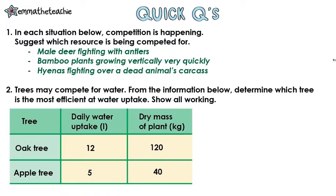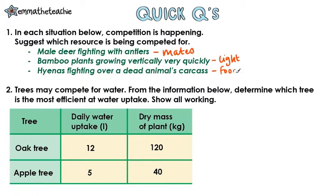Okay, number one. In each situation below, competition is happening. Suggest which resource is being competed for. Male deer fighting with antlers — this is competition for mates. Bamboo plants growing vertically very quickly is competition for light. And hyenas fighting over a dead animal's carcass — this is competition for food.